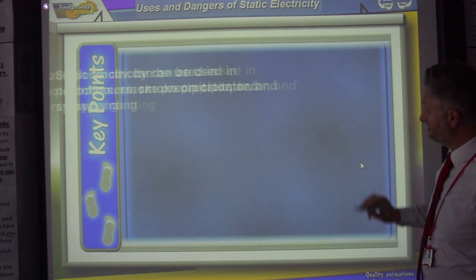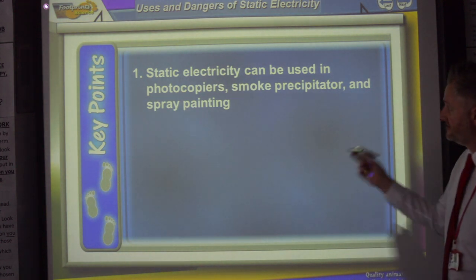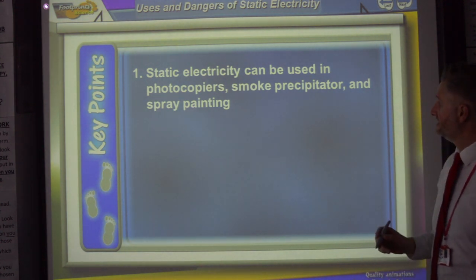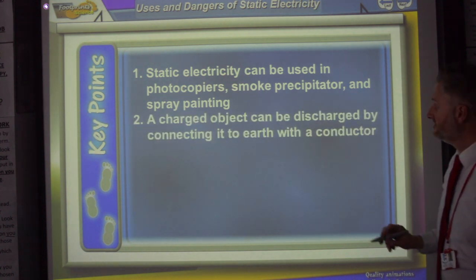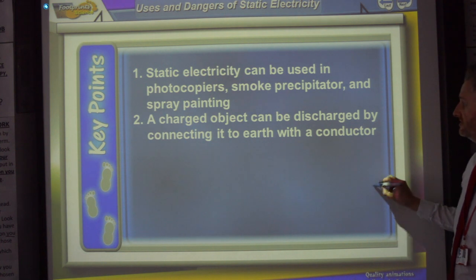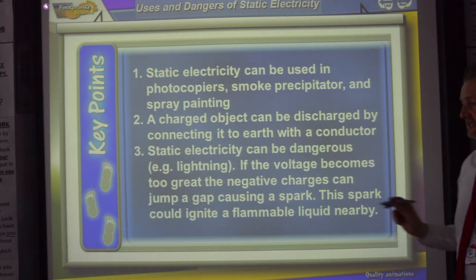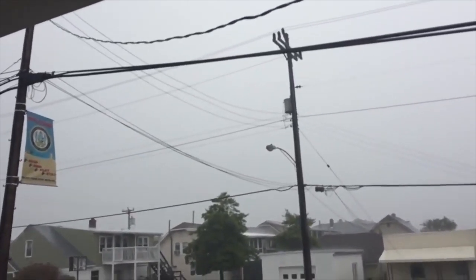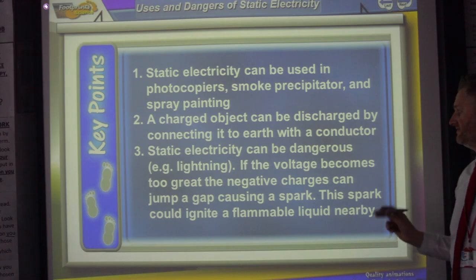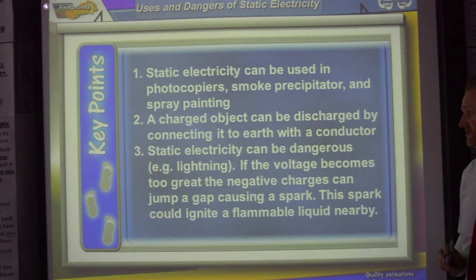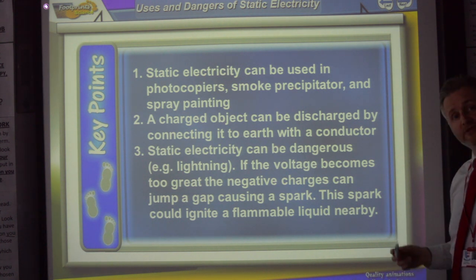Uses and dangers of static electricity. You've got to be able to tell the examiner what you can use static electricity for. So static electricity can be used in photocopiers, smoke precipitators and spray painting. A charged object can be discharged by connecting it to earth with a conductor. And static electricity can be dangerous like lightning. If the voltage becomes too great, the negative charges can jump a gap causing a spark. This spark could ignite flammable liquid nearby.